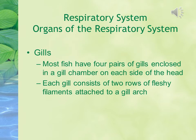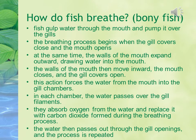The third is the respiratory system. The organs of the respiratory system include the gills. Most fish have four pairs of gills enclosed in a gill chamber on each side of the head. Each gill consists of two rows of fleshy filaments attached to a gill arc. Fish gulp water through the mouth and pump it over the gills. The breathing process begins when the gill cover closes and the mouth opens.